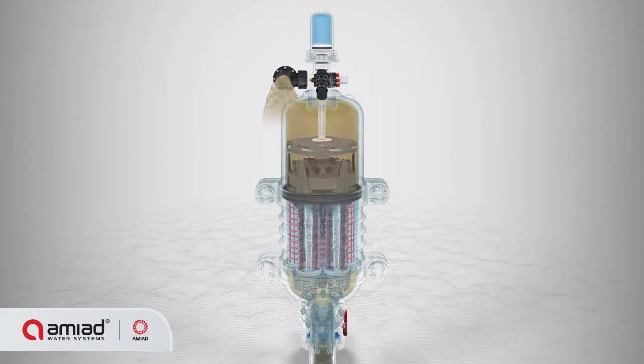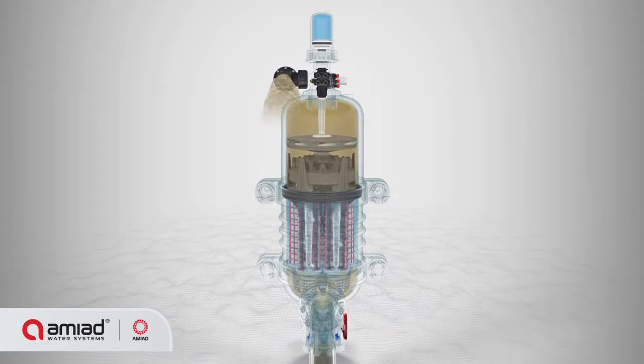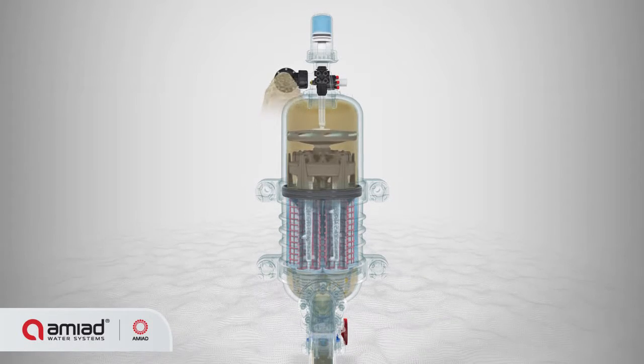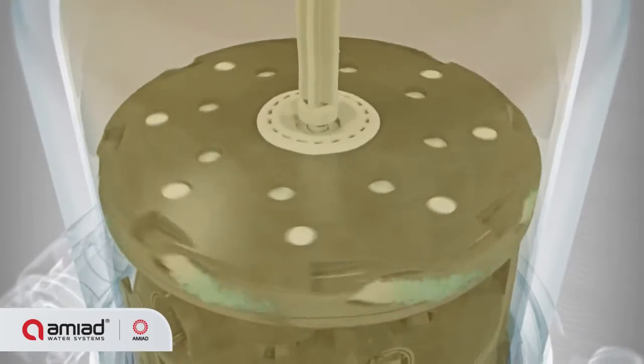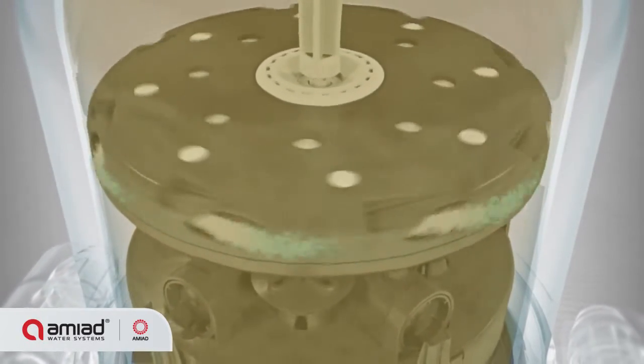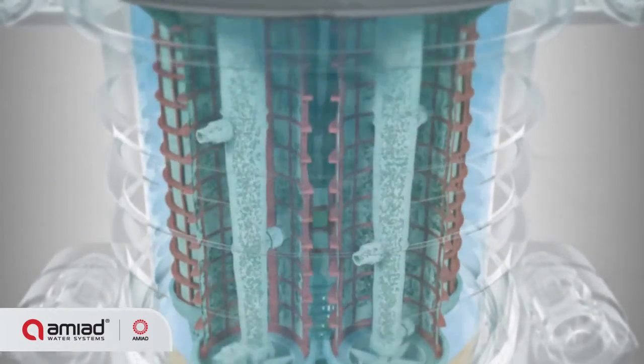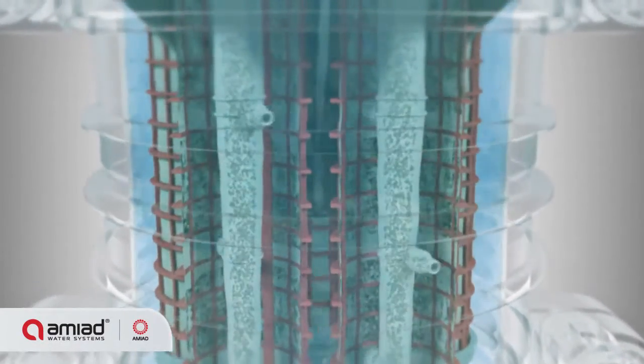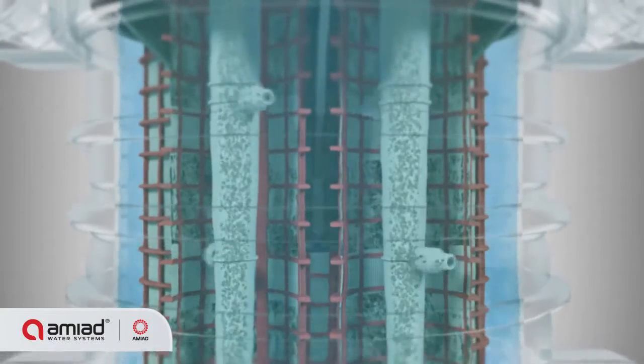This creates a strong back-flush stream, as well as a high-force suction effect at the suction scanner nozzle, effectively removing the dirt particles from the screen. The back-flush water flows through the hydraulic turbine, causing the gearbox to rotate and the scanners to spin.